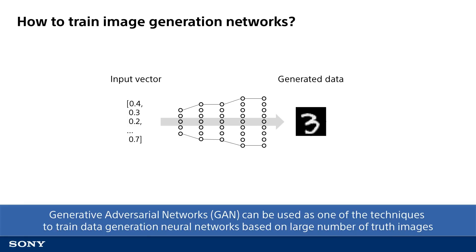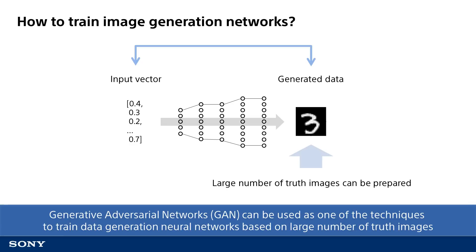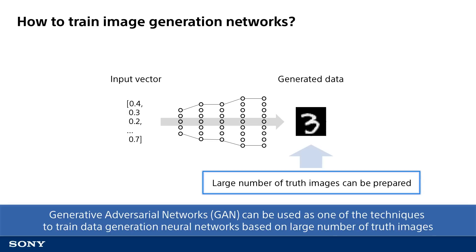Now let's go over the process to train a neural network to generate image data. You can easily get the desired output by using a structured training framework in which you collect a significant amount of data on handwritten digits. Training phase requires datasets consisting of pairs of inputs and outputs. We can use GAN as a technique to train a neural network to generate data by using a large number of ground truth images. Such an image generation system would generate images based on vectors compressed via an encoder.